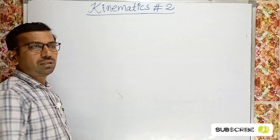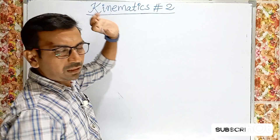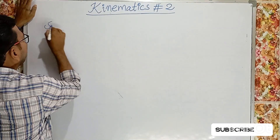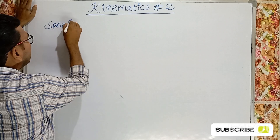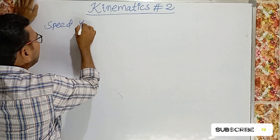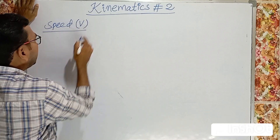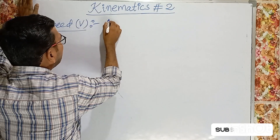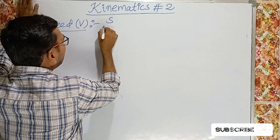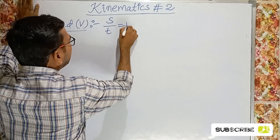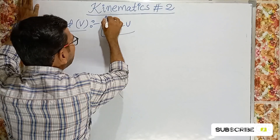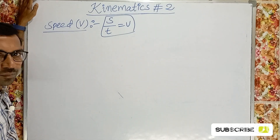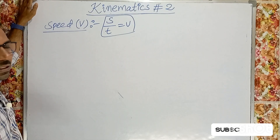Today we are going to discuss speed and its types. Speed symbol is V. What is speed? Distance covered per unit time is called speed. Speed equals distance covered per unit time. There are 4 types of speed.